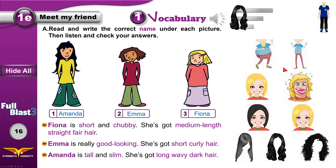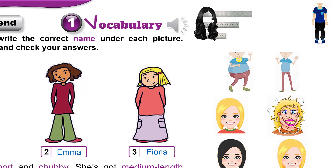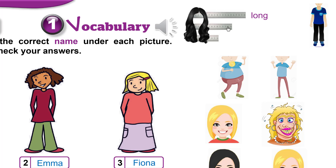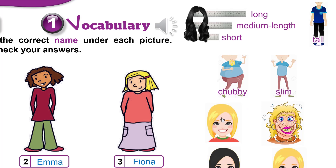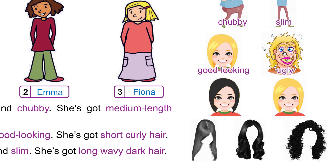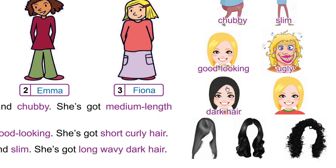Now if I hide all the new adjectives, can you name them? Let's try: long, medium-length, and short. The boy is tall. Chubby and slim. Beautiful or good-looking, ugly. Dark hair, fair hair — you can say blonde as well. Straight hair, wavy hair, and curly hair.